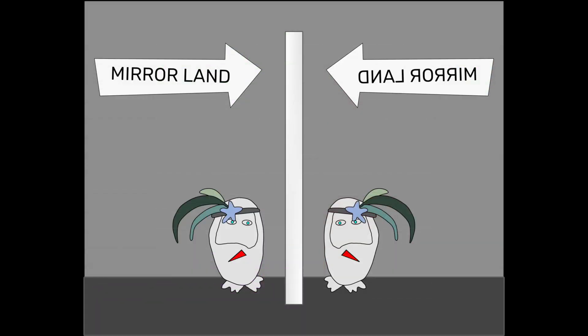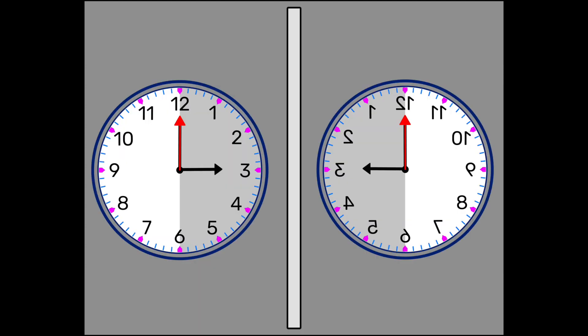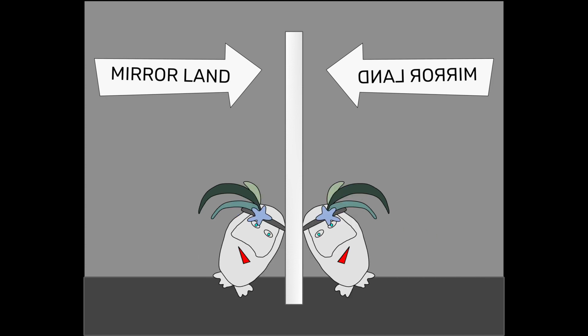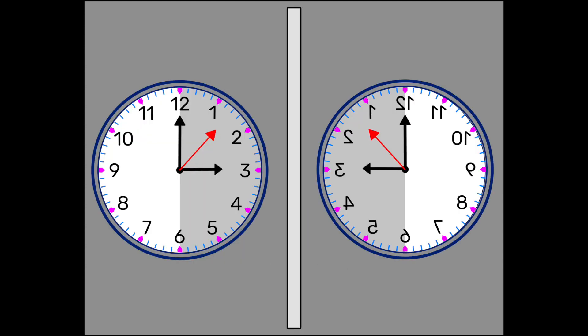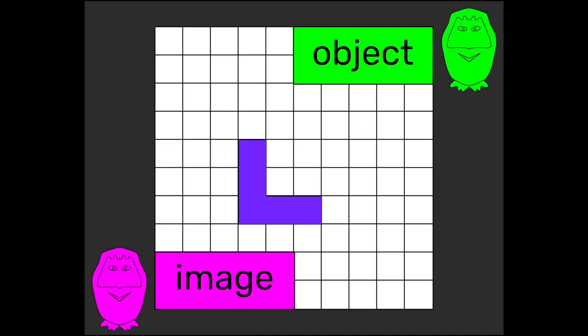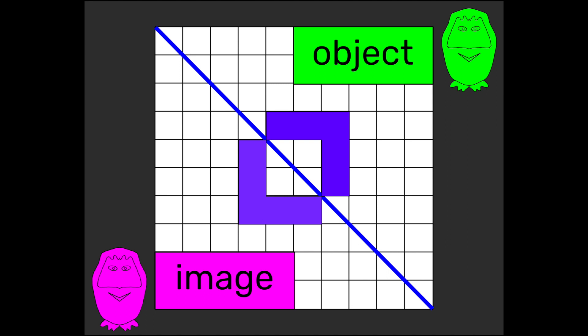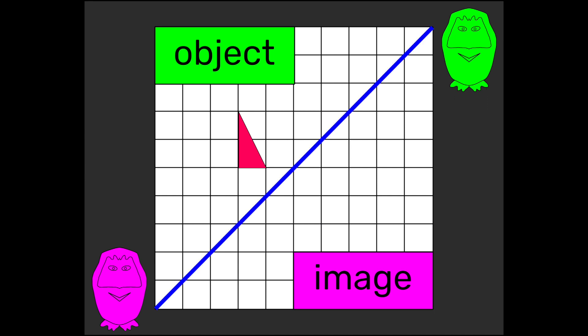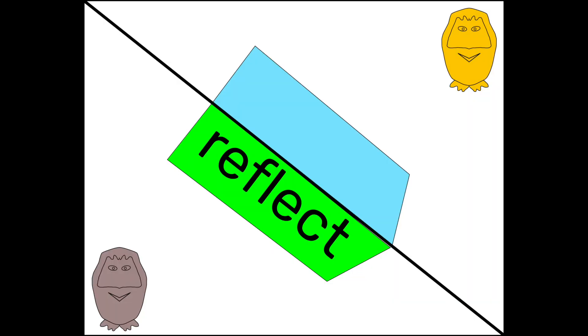You take an object and a mirror line, an image you can make. Keep your distance from the line the same, then you'll make no mistake. You take an object and a mirror line, an image you can make. Keep your distance from the line the same, then you'll make no mistake. Reflect,